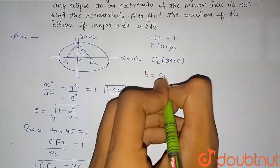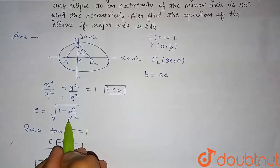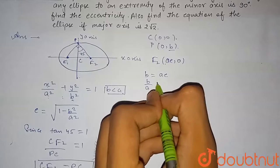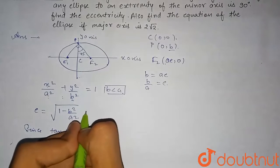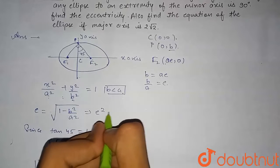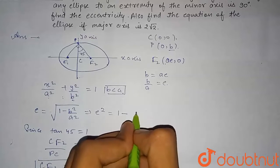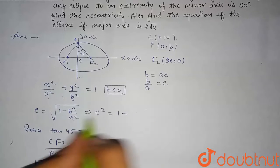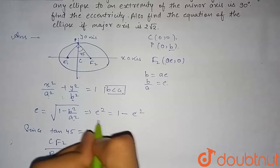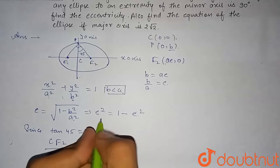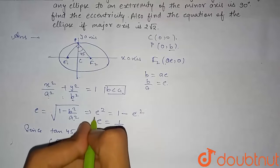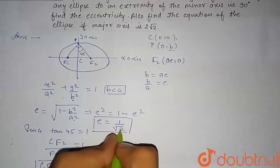Since PC = CF2, we get b = ae, so b/a = e. Squaring both sides of the eccentricity formula e² = 1 - b²/a², and substituting b/a = e, we get e² = 1 - e², which gives 2e² = 1. Therefore the eccentricity e = 1/√2, taking the positive value since eccentricity is a positive quantity.